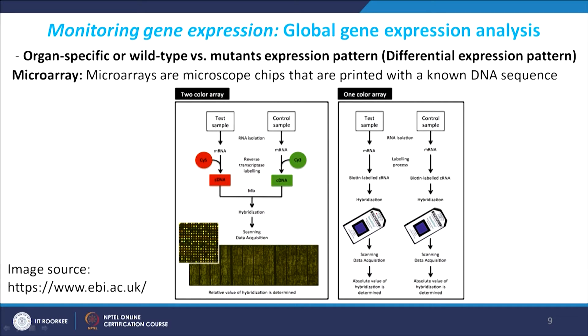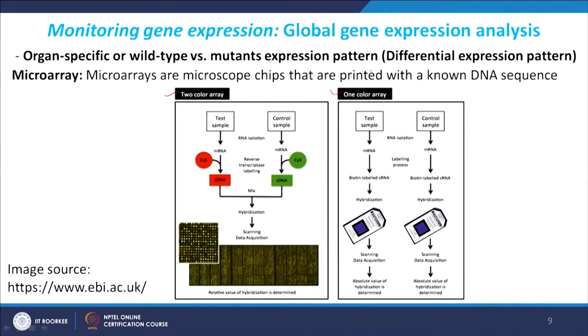Once the genome was sequenced, we identified the genes and their sequences. Then probes for those genes were designed and spotted onto these chips. So for every gene, we had a kind of probe. There were two ways to identify differential expression: the two-color way and the one-color way.